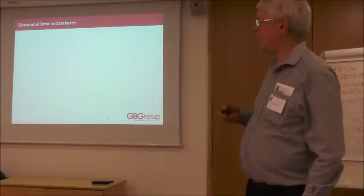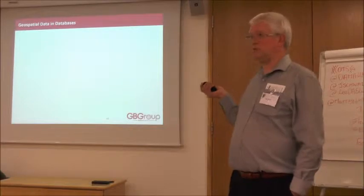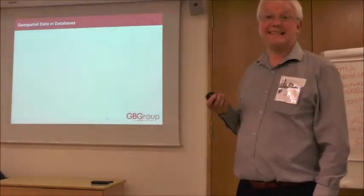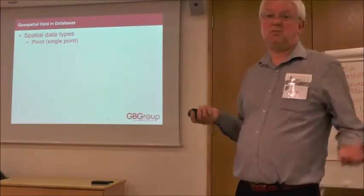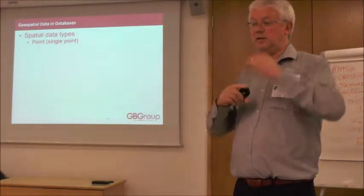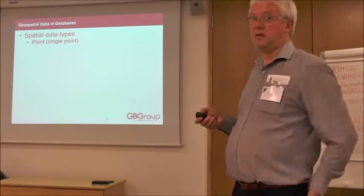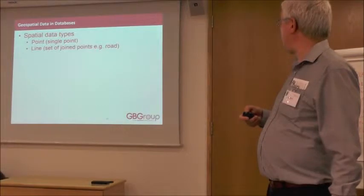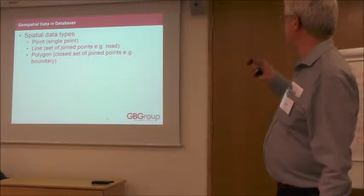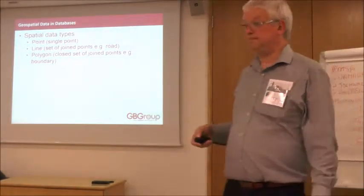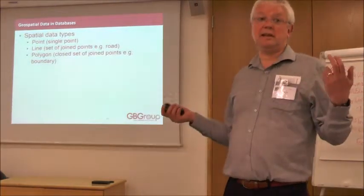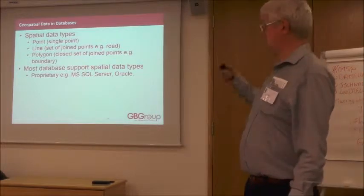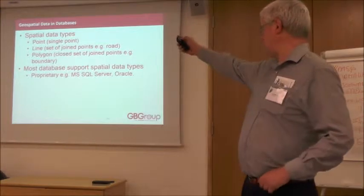To really exploit geospatial data, use a database. Modern databases now have extensions for spatial data types. Point is simply a single point in space — a coordinate defining a position on the planet's surface. Line is a set of joined points — examples include a road, canal, or railway. A polygon is a closed set of joined points — for example a local authority boundary, any kind of bounding data, or a natural feature like a lake.